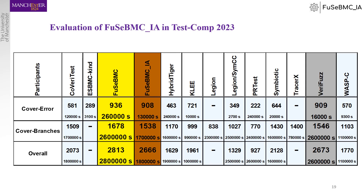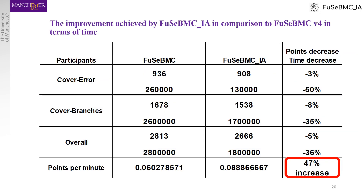The main goal when developing our tool was to cut the test generation time while retaining a high score. The results show that our tool ranked third place having the least time in the top three. When we compare our tool to FUSI-BMC version 4, we notice a slight decrease in score. However, our goal was to cut down the time it takes to produce these test cases. We achieved this by lowering the time by 50% in Cover Error, 35% in Cover Branches, and overall by 36%, with a slight compromise of 5% in the score. When we compare how many points per minute it produces, we see an increment of 47% over FUSI-BMC version 4.